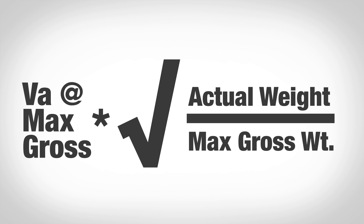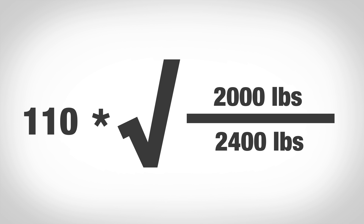But how much should you slow down VA? Here's a simple formula: take your current weight divided by your maximum gross weight, take the square root of that, and multiply it by your original max gross weight VA speed. So if your maximum gross weight is 2,400 pounds and you currently weigh 2,000 pounds and your original VA was 110 knots, your new VA at 2,000 pounds would be about 100.416 knots.